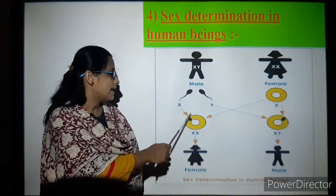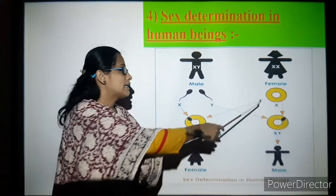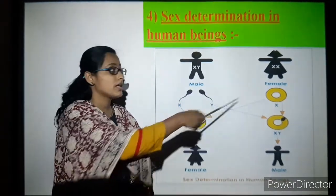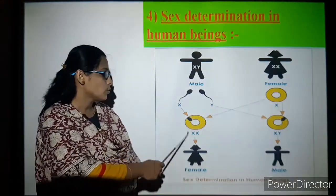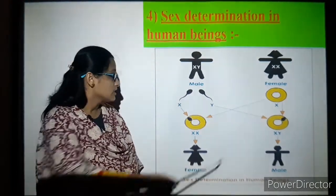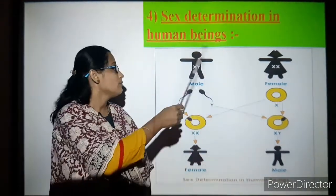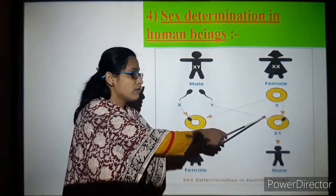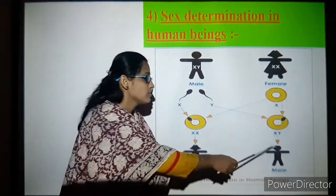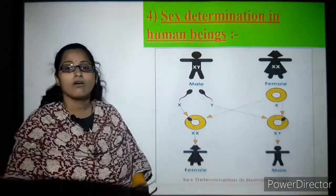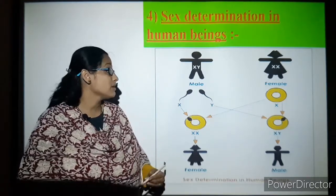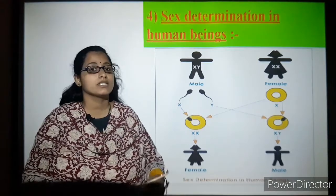When an X chromosome from the male combines with an X chromosome from the female, it forms an XX chromosome, giving rise to a female baby girl. But when a Y chromosome from the male fuses with an X chromosome from the female, it forms an XY chromosome, which gives rise to the birth of a male baby. This is how we determine the sex of human beings.